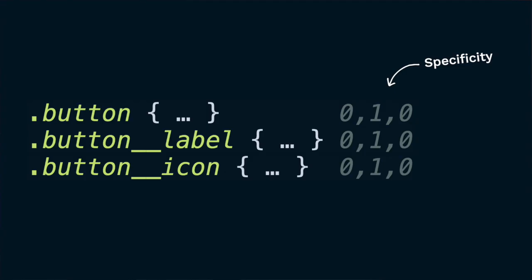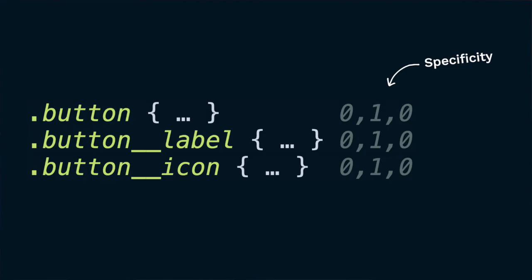Before we jump into modifiers, let's cover the CSS implementation. One of the core principles of BEM is to keep specificity very low. Therefore, in CSS, we avoid nesting — with some exceptions, but in general we avoid it. Instead, we use just a single class selector for both the block and an element, and we put them at the top level of the stylesheet. That's why it's called flat — no nesting, no concatenated selectors.